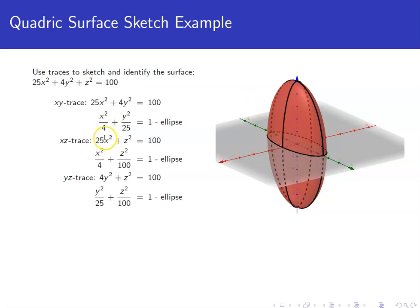The xz trace comes about by putting y equal to zero. We get the equation 25x² + z² = 100. Dividing both sides by 100 again puts this in standard form. We go out and back two units from the center. We go up and down ten units from the center. So, that's this ellipse here.